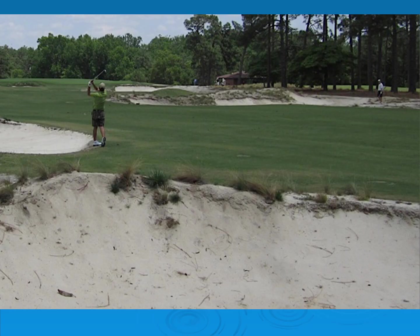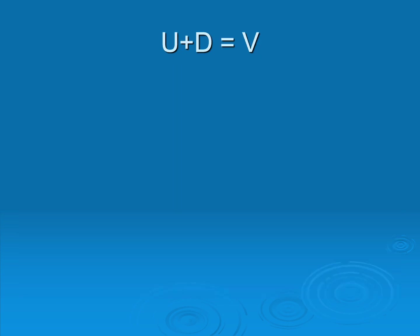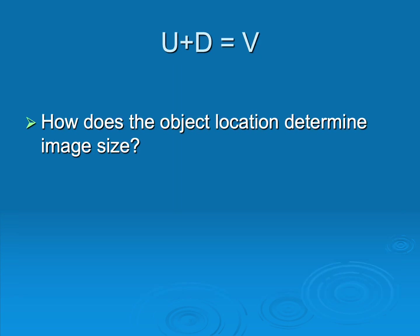If we look at this photograph of a couple of golfers, there's a gentleman in green on the left and a gentleman in a light blue shirt on the right. You notice there is an image size difference. If I were to ask you which golfer is closer to the camera, you would think it would be the gentleman in green because his image size is larger. To understand this mathematically, we go back to U plus D equal V.